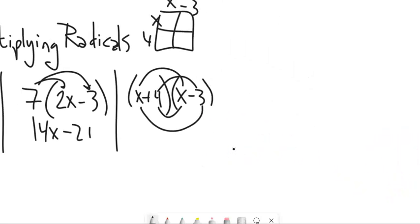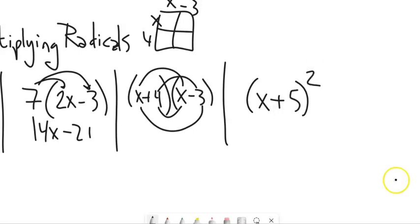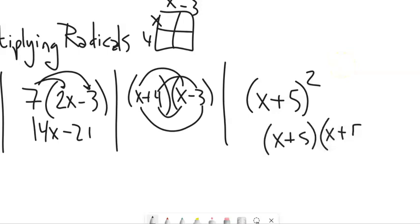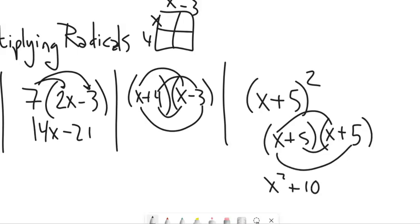And similarly, one last review idea: if I had x plus 5 squared, to square something means to multiply by itself. So x plus 5 squared is (x + 5) times (x + 5). It's not x squared plus 25. It's x squared plus 10x plus 25. That doesn't just distribute across the addition — it means x plus 5 times itself.